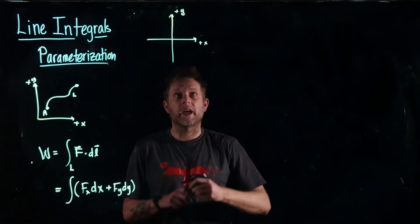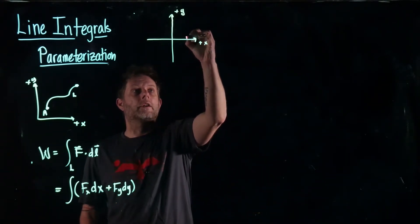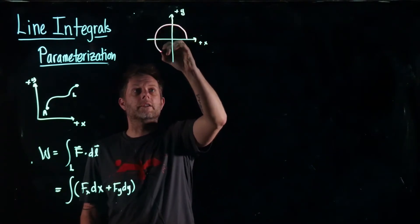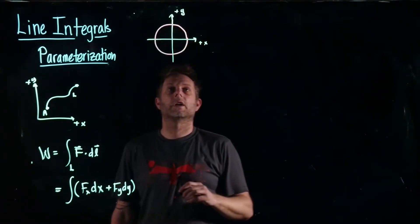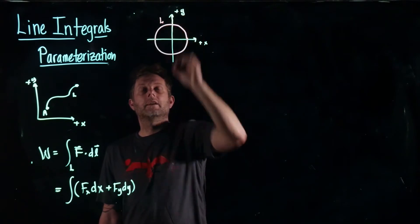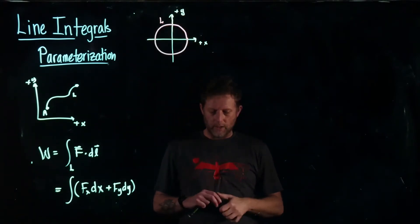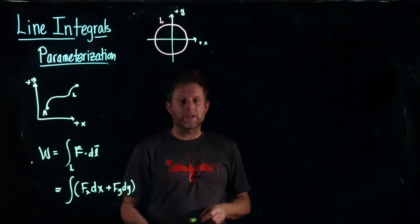And then I'm going to say I'm going to calculate the work as I go along a circle for example. So this is my path. It's a circle.